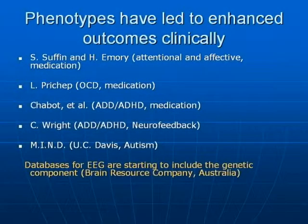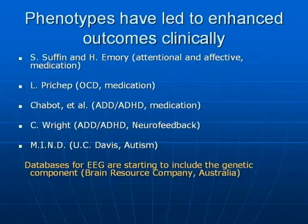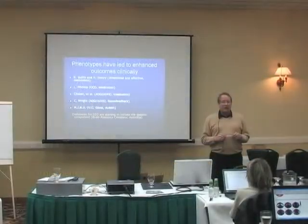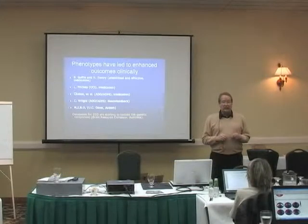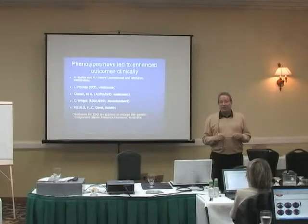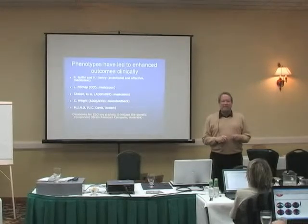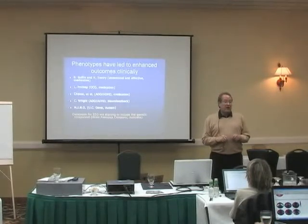Here they did medication prediction. There's only one kind of OCD in the DSM — it's not subgrouped. But in the EEG, Pritchett used cluster analysis to identify two clusters. One is an alpha cluster; the other is a slow cluster of theta-delta mix. The slow cluster had less than 15% responding to the SSRI. The alpha cluster had about 85% responding to the SSRI.